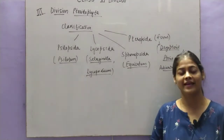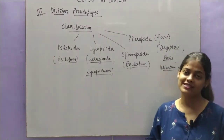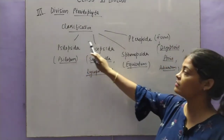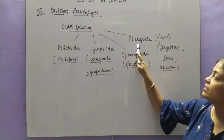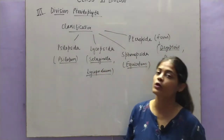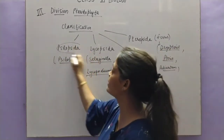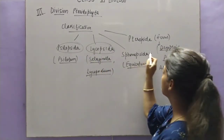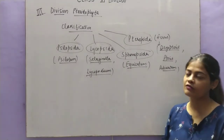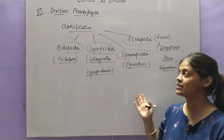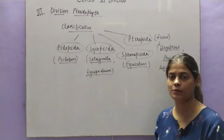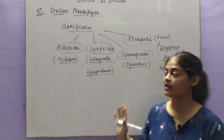One thing left in division Pteridophyta is the classification. Pteridophytes have been divided into four classes: Psilopsida, Lycopsida, Sphenopsida, and Pteropsida. These are the four classes into which pteridophytes are divided. Examples are also given in the NCERT book. We need to study the life cycle, examples, importance, and characteristics — the details are in the NCERT book.